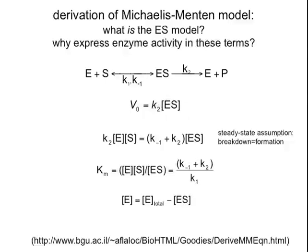We also make some assumptions here. In this case, we'll make a steady-state assumption. So the forward rate — that is, the formation of the ES complex — and the reverse rate — there are two ways to destroy the ES complex: non-productively by K-minus-1 or productively by K2. Each of those two processes, formation and breakdown of the ES complex, are happening at the same rate. That is, we are in a steady state: ES concentration is not changing drastically over the course of our experiment.